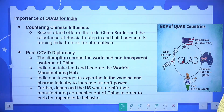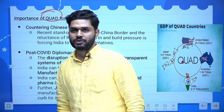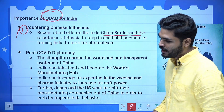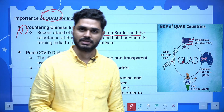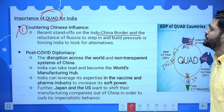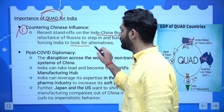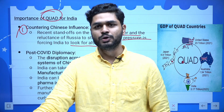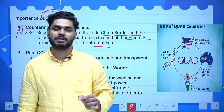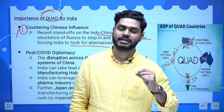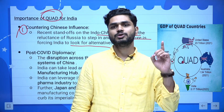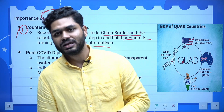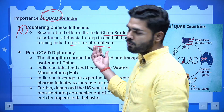Why is Quad so important for India? First, countering Chinese influence. The recent standoffs on the Indo-China border — be it Doklam, be it Galwan — we have experienced this. The reluctance of Russia to step in and build pressure is forcing India to look for alternatives. Russia, which has been our trusted partner, didn't step in to support us or even to mediate between the two countries. That was when we were alarmed and looking for alternatives, and Quad is one such alternative.